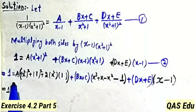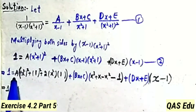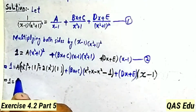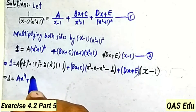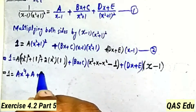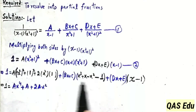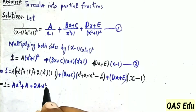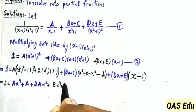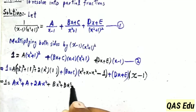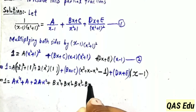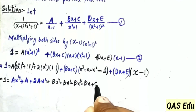Left-hand side remains 1. Now A multiplied by the expanded form: x power 4 times A gives A x power 4; 1 squared gives 1, A times 1 gives A; 2x squared times A gives 2A x square. Then Bx multiplied by x cube gives B x power 4, Bx multiplied by x gives B x square, Bx multiplied by minus x square gives minus B x cube, Bx multiplied by minus 1 gives minus Bx. C multiplied by x cube gives C x cube.